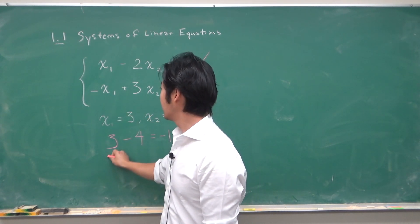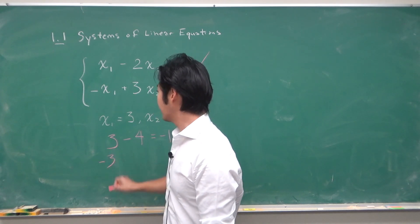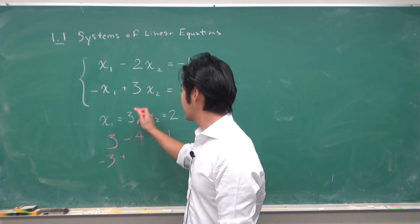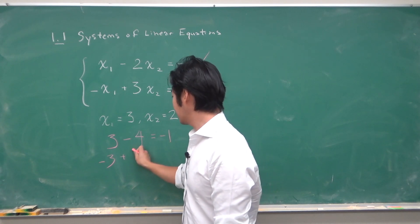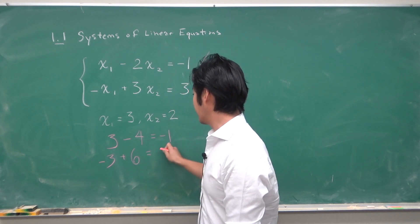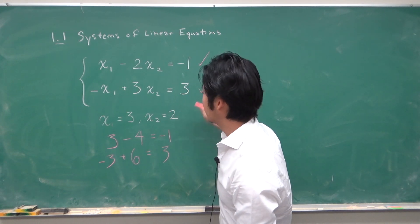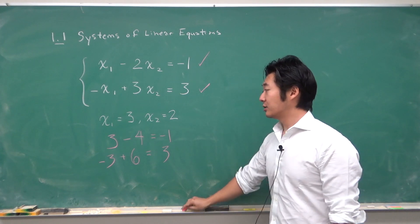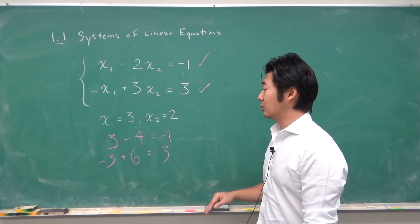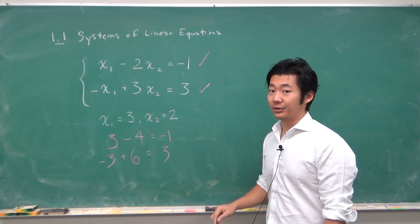What about this one? x1 is negative 3 plus 3 times 2 is 6 and so we get 3. So the second equation is satisfied. So x1 equals 3 and x2 equals 2 is a solution.